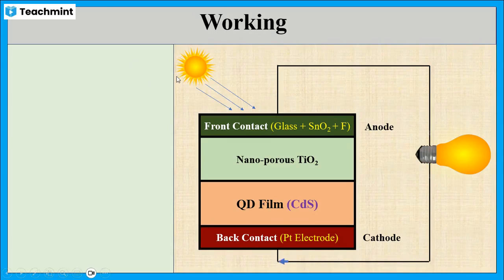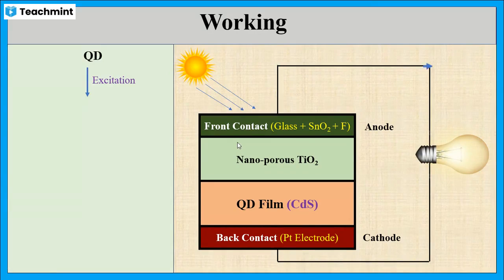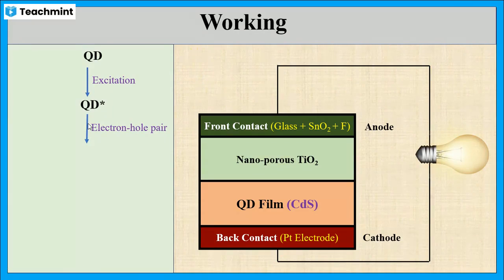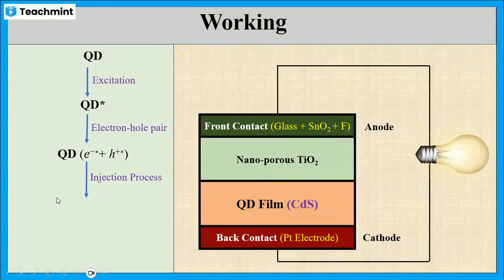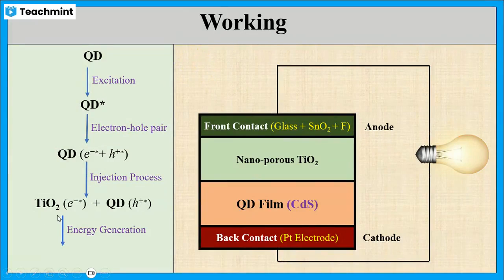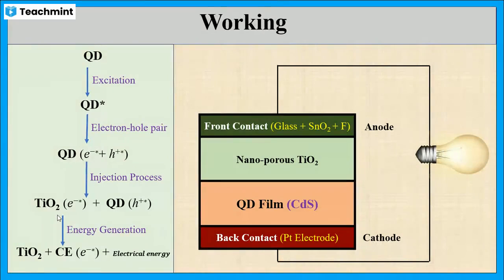To summarize the entire process: initially, light absorbed by the front contact excites the quantum dot from ground state to excited state — QD to QD*. Next, that creates an electron-hole pair. The thermal energy from sunlight enables the dissociation of the electron-hole pair. The quantum dot oxidizes by transferring its electrons to the titanium oxide. Since titanium oxide is not stable in the excited state, the electrons move in the external circuit from anode to cathode, producing electrical energy, as shown in the diagram.